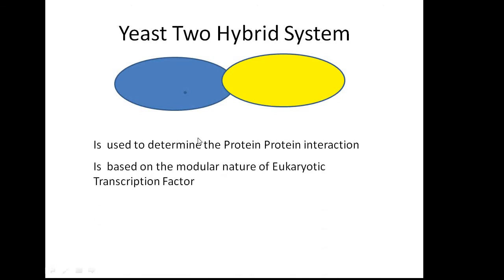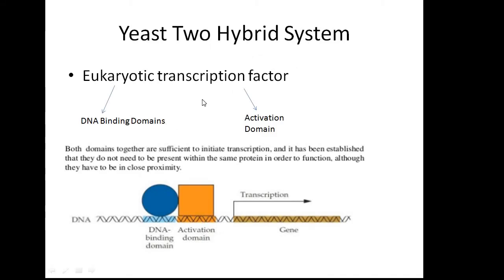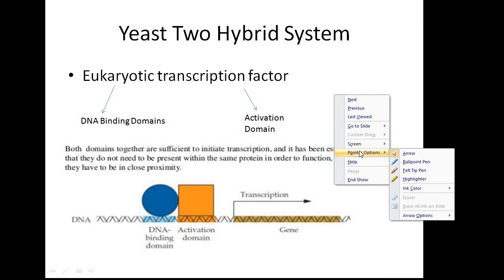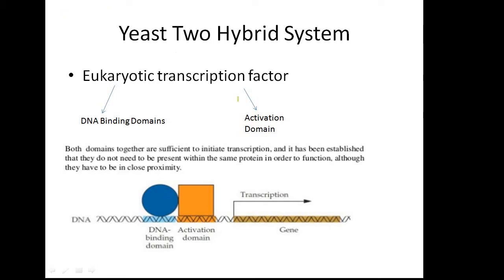The method is usually based on the modular nature of eukaryotic transcription factors. Eukaryotic transcription factors usually consist of a DNA binding domain and an activation domain. Both of these domains are very much necessary to initiate transcription, but they are not required to be present in a single protein — they are only required to be in close proximity to each other. If they are close to each other, transcription gets initiated; if not, no transcription will occur.